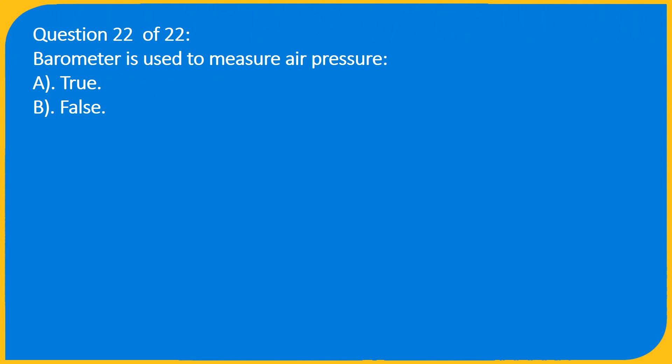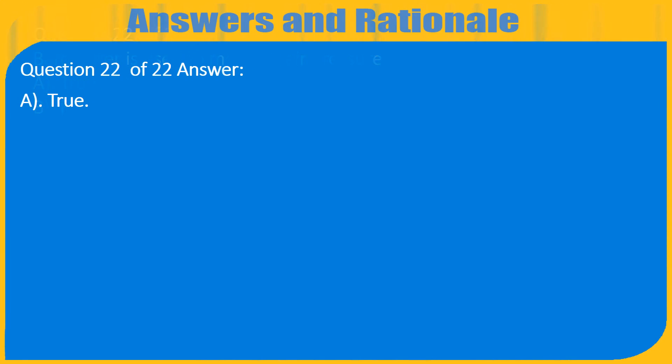Question 22 of 22: A barometer is used to measure air pressure. A. True, B. False. Answer: A. True.